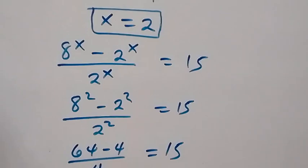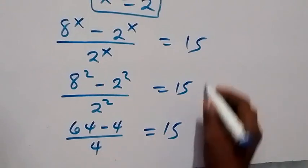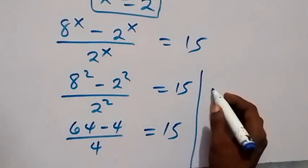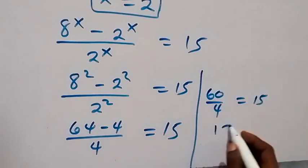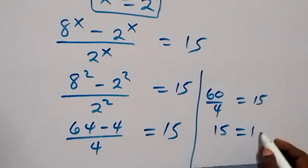From here we have 64 minus 4, that's 60. So we have 60 over 4, which equals 15. And 60 over 4 is 15, which equals 15.